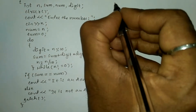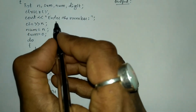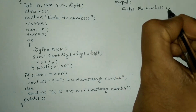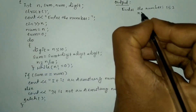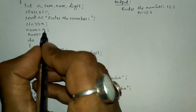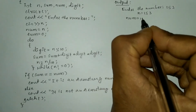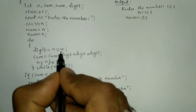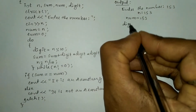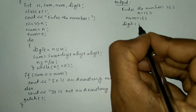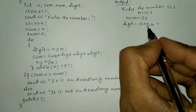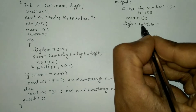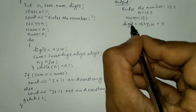Now let us trace an example — run one. When compiled and run, the program asks the user to enter the number. I enter 153. So n holds 153, which is also assigned to num, so num = 153. Sum is set to zero. In the do block: digit = 153 % 10. Modular division gives us the remainder — 153 divided by 10 leaves remainder 3, so digit = 3.